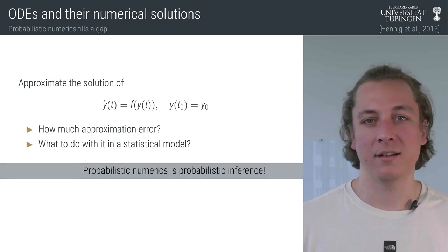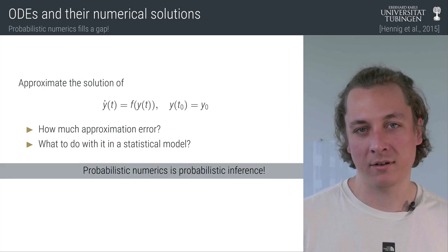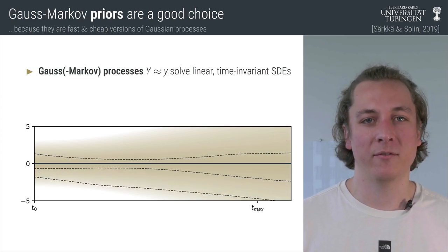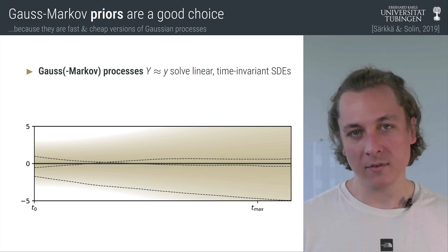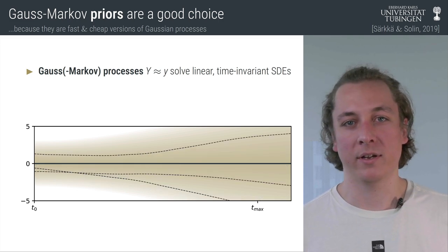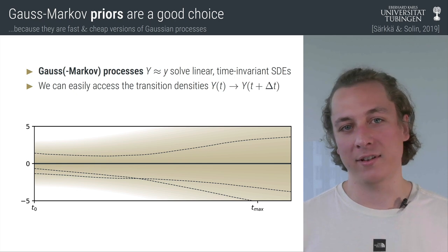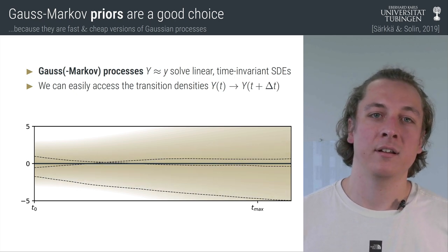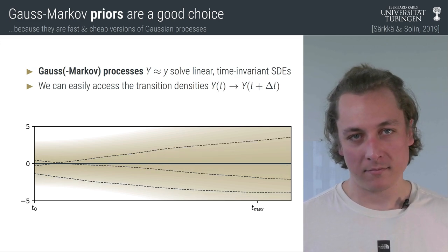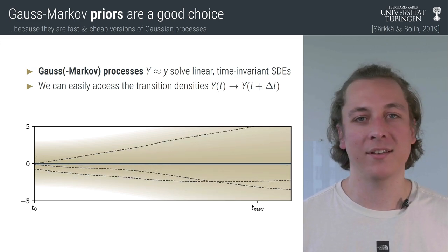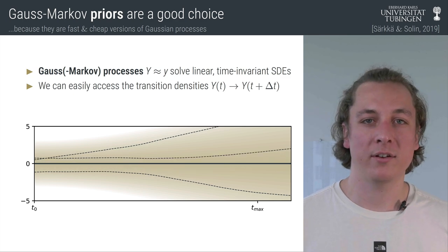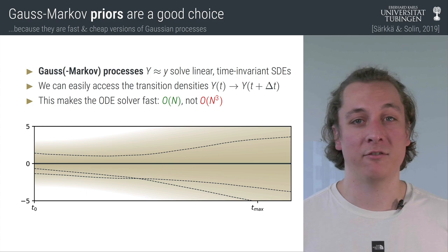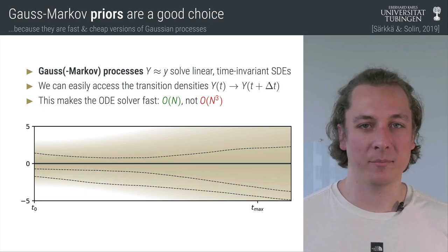We need a prior, a likelihood, and we need to compute a posterior. As a prior, Gauss-Markov processes are a good choice — they solve linear time-invariant SDEs, which is why we can compute the transition densities from the state at one time point to another easily. This is one of the reasons why the probabilistic ODE solver is as fast as non-probabilistic methods. In this plot here you can see an integrated Wiener process prior. Here in Tübingen we like integrated Wiener processes, but you can use any Gauss-Markov prior.